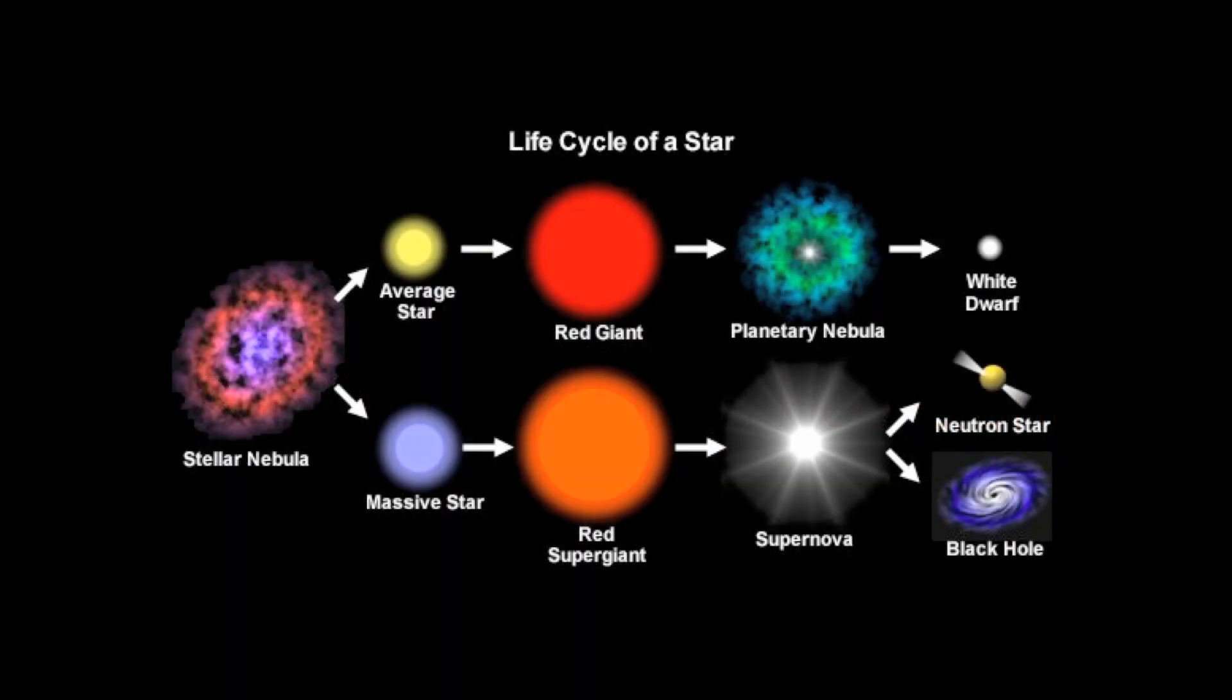So you can see here, all stars start out as a stellar nebula. And depending on its mass, it's going to either take the upper path or the lower path. Our sun is going to turn into an average star, which it is now. It's going to turn into a red giant, then a planetary nebula, then a white dwarf. The much larger stars, the more massive stars, turn into a red supergiant, then they explode to a supernova, and then they can either turn into a neutron star or a black hole.